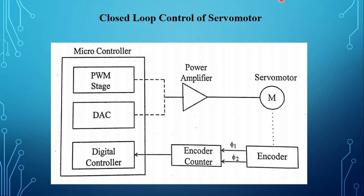Servo motor is a special purpose motor which is used to control machines with precision. Usually the servo motor is used to control angular motion from 0 to 180 degrees and 0 to 90 degrees. The servo motor working principle is based on pulse width modulation technique. However, the PWM signal is used to control position rather than speed. The function of the servo motor is to receive a control signal that represents a desired output position of the servo shaft. It uses a position sensing device to determine the rotational position of the shaft.